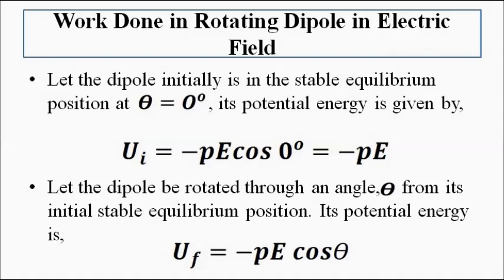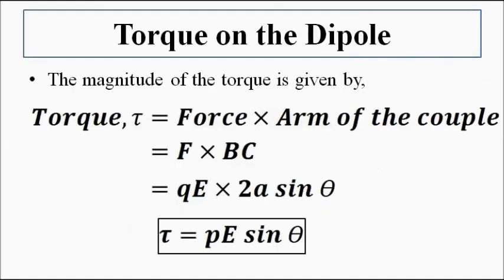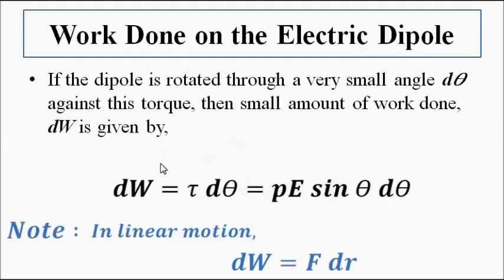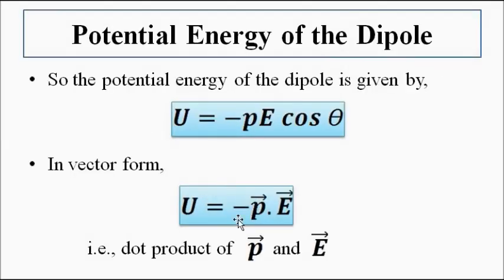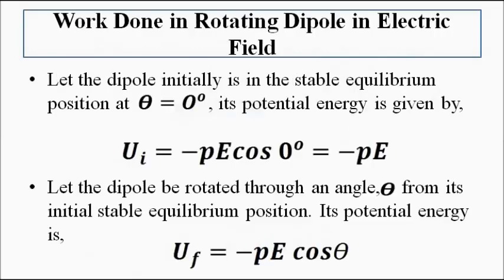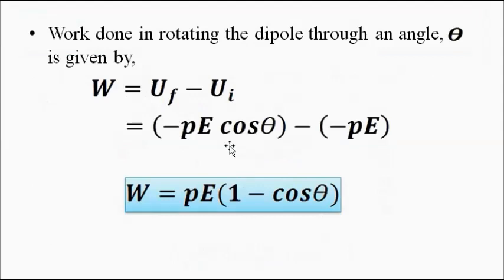These are the key concepts associated with the potential energy of an electric dipole in a uniform electric field. We used the torque expression to find the work done in rotating the dipole against the clockwise torque through a certain angle, then obtained the potential energy as U = −p⃗ · E⃗, and evaluated the work done in rotating the dipole through a given angle. I hope you liked this video — please subscribe to Engineering Tutorial for more videos on electrical, electronics, instrumentation, and communication engineering. Have a great day, thank you!